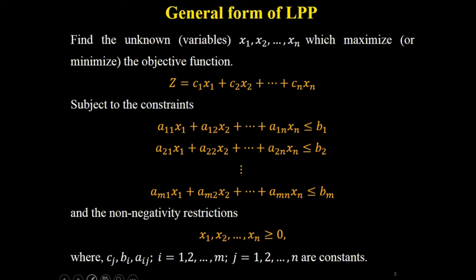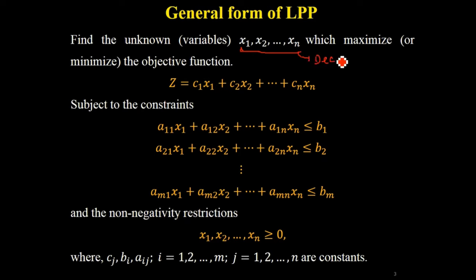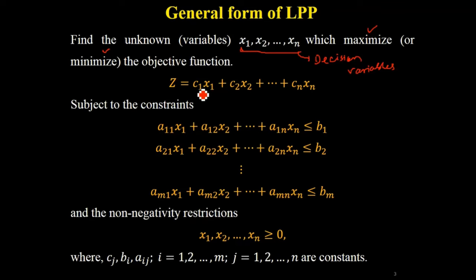As we know, LPP - linear programming problem - if we have n number of independent variables, x1 to xn, these are your decision variables. If you have n number of decision variables, the objective function is: find x1, x2 up to xn which maximize or minimize the objective function z. Objective function z will always be a linear combination c1*x1 + c2*x2 + ... + cn*xn, where c1, c2, cn are scalars or constants.